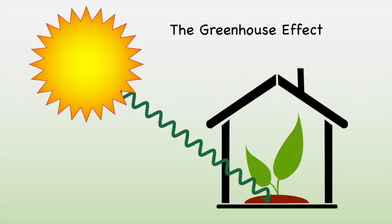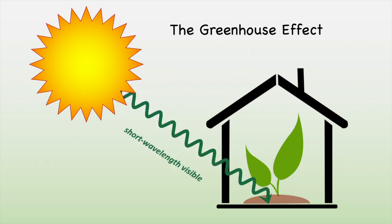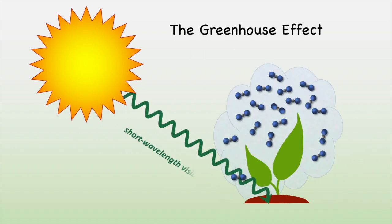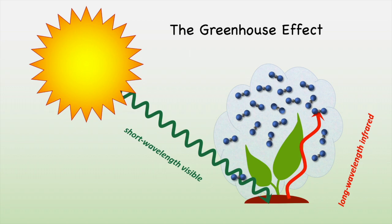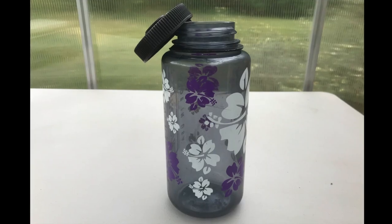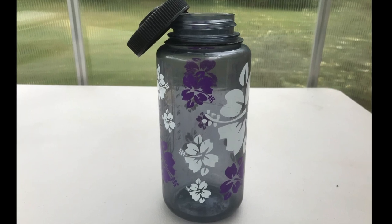CO2 is called a greenhouse gas because it's transparent to incoming visible light, just like the glass in a greenhouse. But, just like glass, it also absorbs the outgoing infrared energy. When molecules absorb energy, they vibrate and cause motion that warms the atmosphere. But if there are only 415 CO2 molecules in a million molecules of air, how likely is it that an outgoing photon of energy would even hit a CO2 molecule? Instead of trying to think about the whole atmosphere, let's work with a more manageable volume — a one liter bottle.